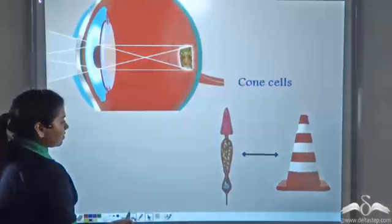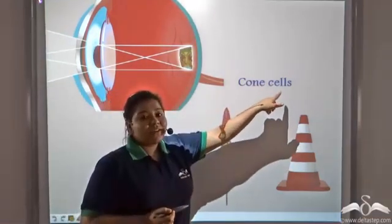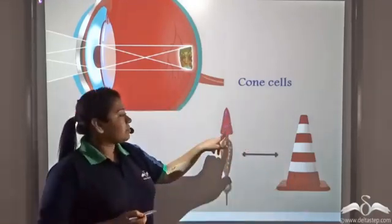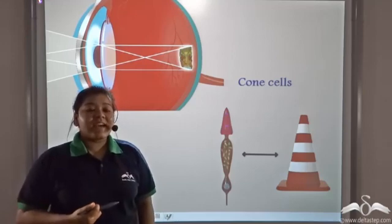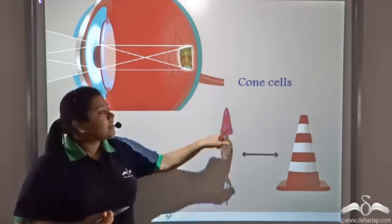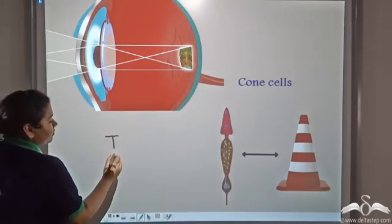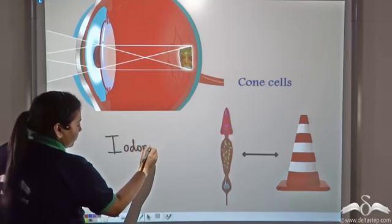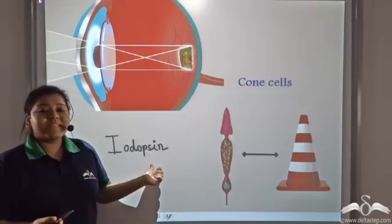Now let us see the two receptors. The first receptor is known as the cone cells — cone because the topmost part of the cell is cone shaped. The cone cells are activated in bright light and are responsible for colour vision. The pigment present in the cone cells is called Iodopsin, and Iodopsin helps in colour vision.